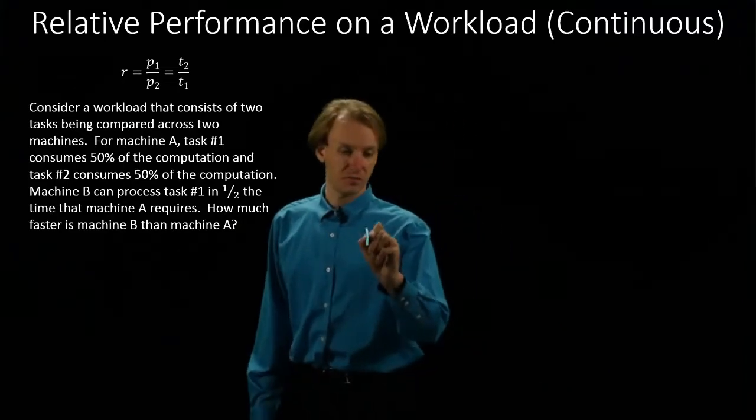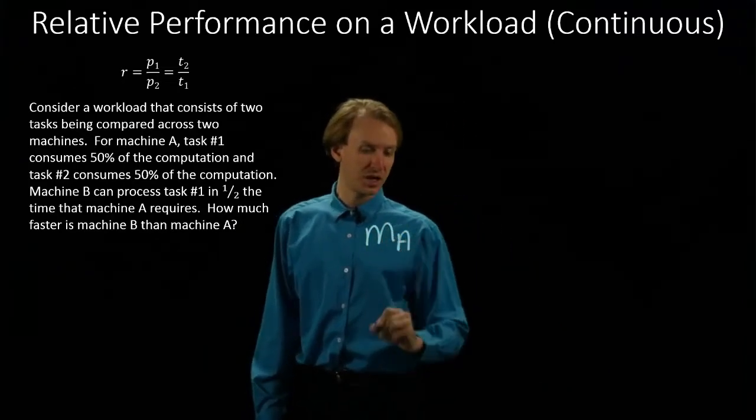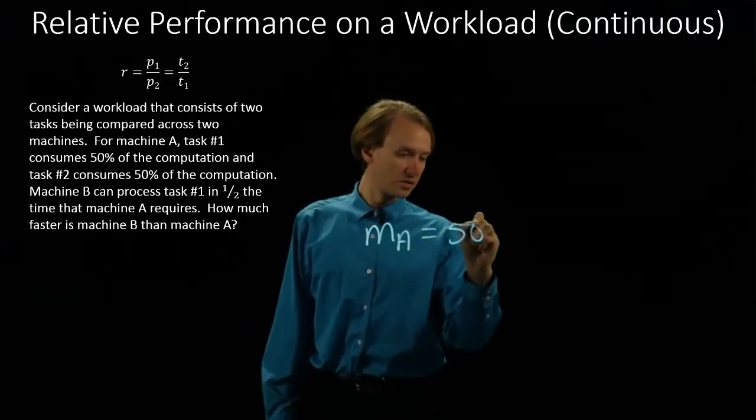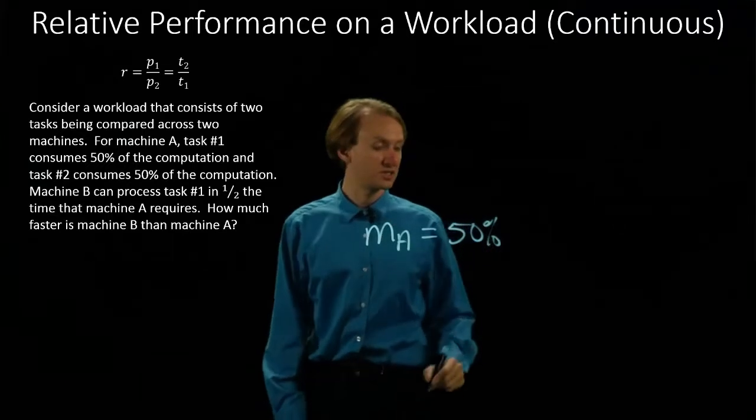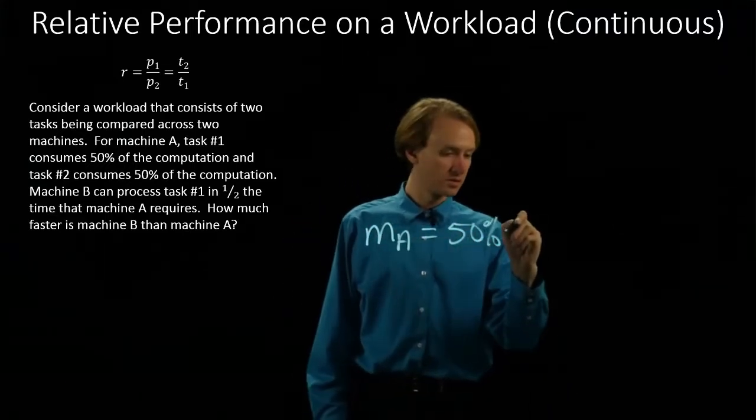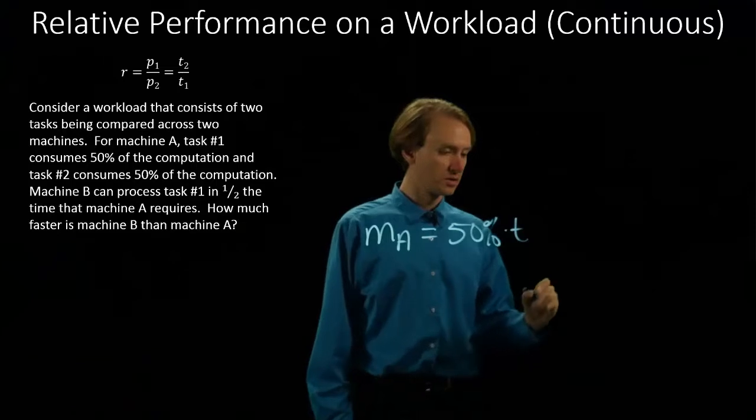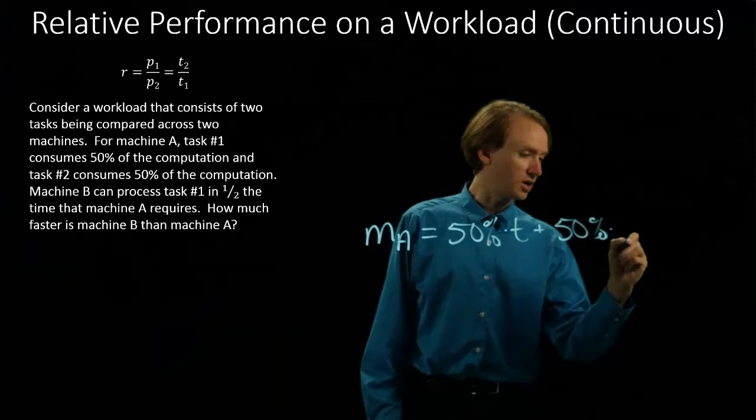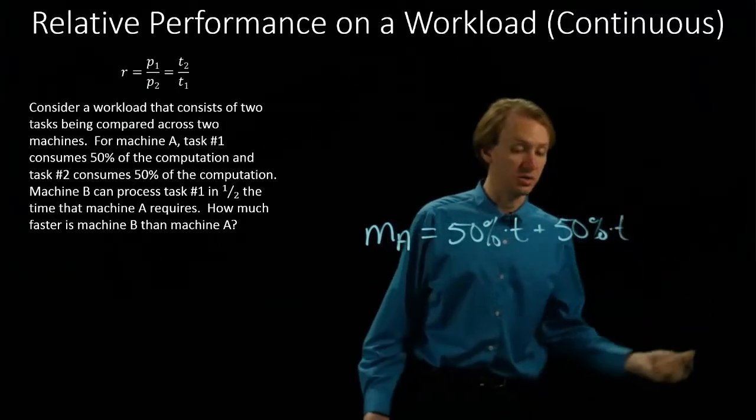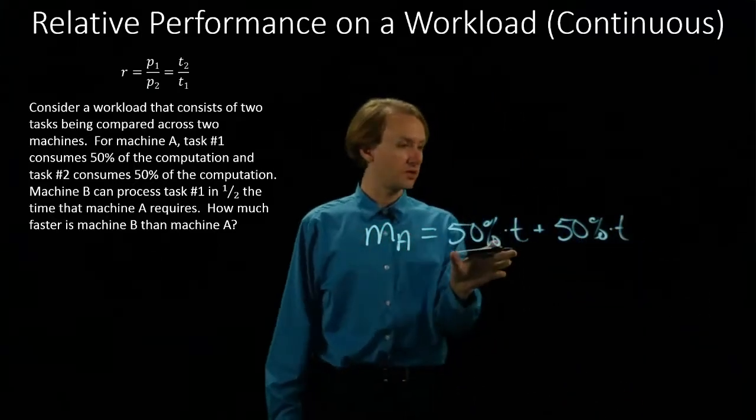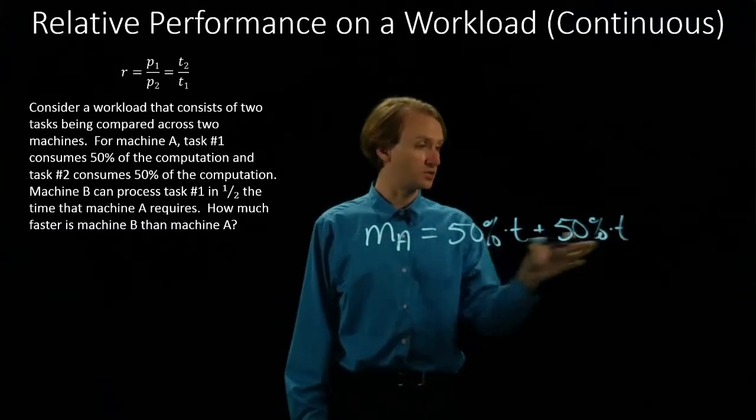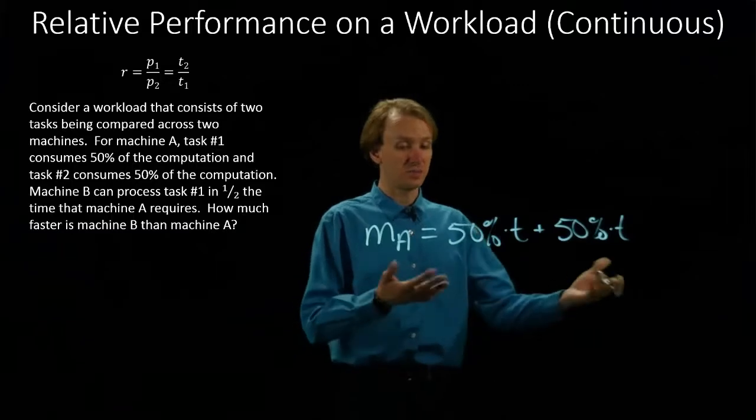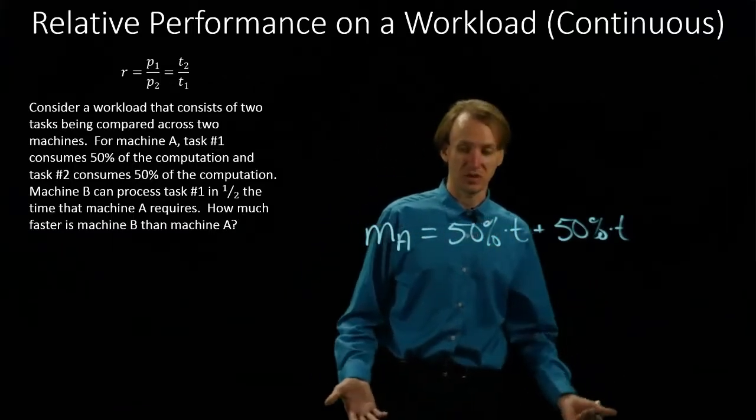So we know that machine A spends 50% of its time on task one. And it spends the other 50% of its time on task two. So together, 50% of its time plus 50% of its time is 100% of its time. So it's spending all of its time working. This is pretty much what we'd expect.